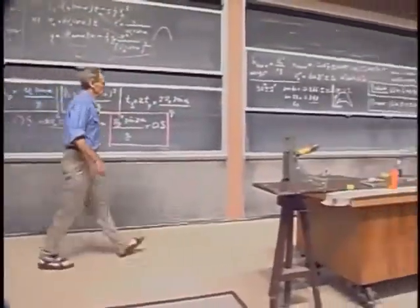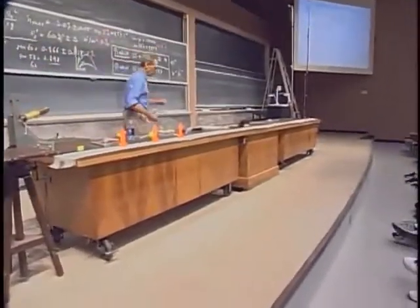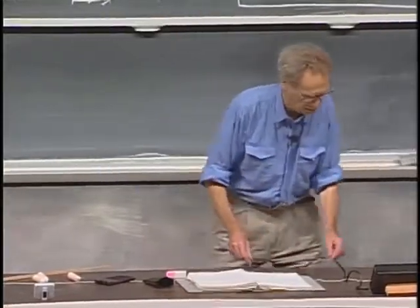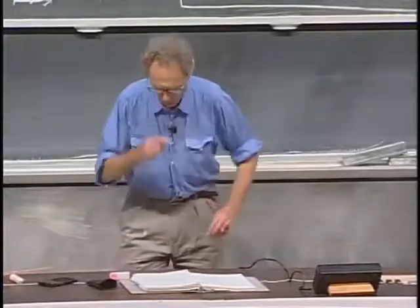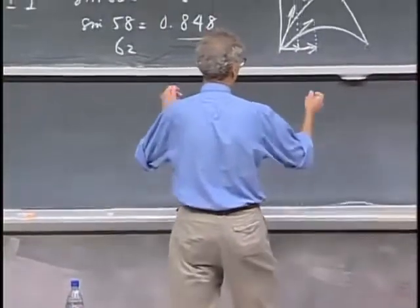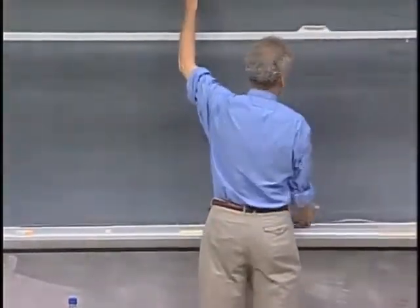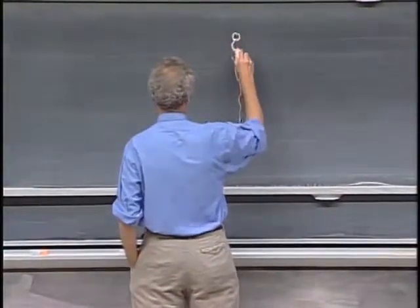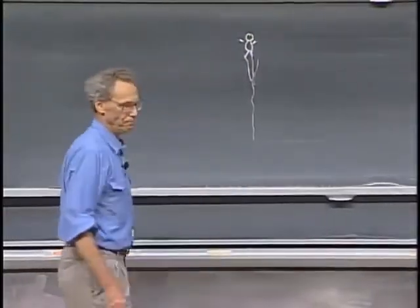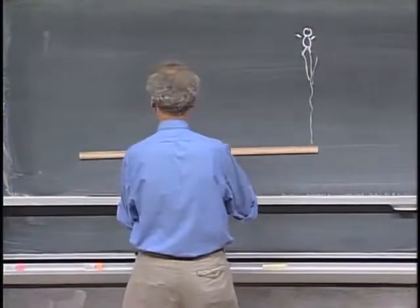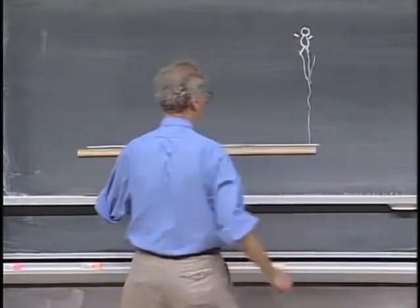We now enter a different part of this lecture, which is actually a very sad part. You know that people in Africa shoot monkeys. There is a monkey here in a tree, very happy. And here is a hunter who never took 8.01.